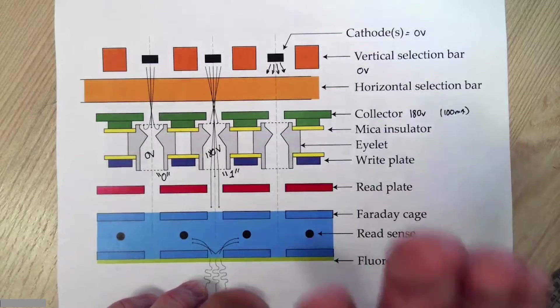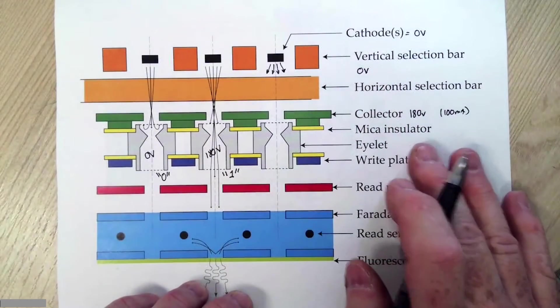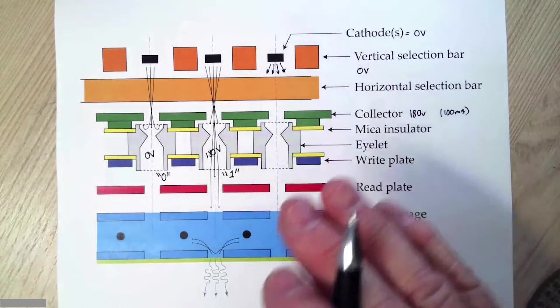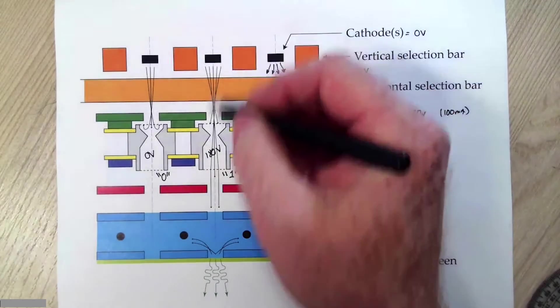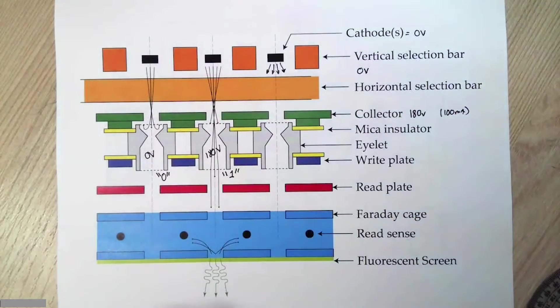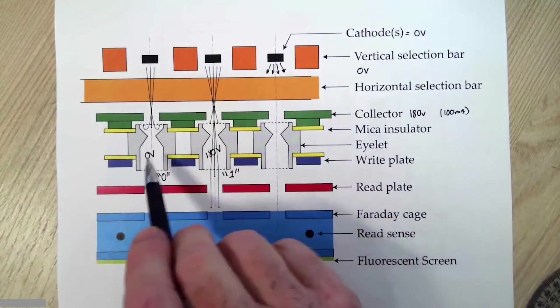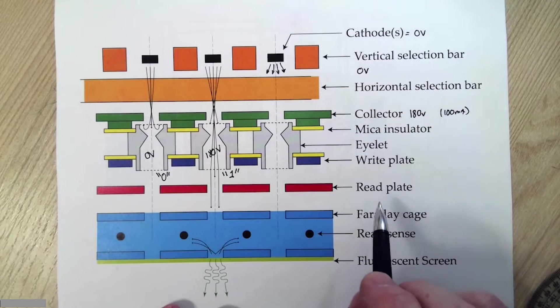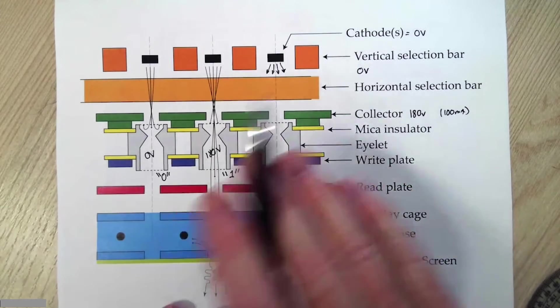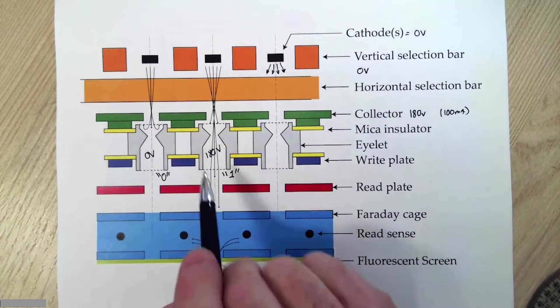Now, the selection process is important for whenever we write and read. So I'm going to come back to our selectors. In the idle state of the tube, this needs to be at zero volts so that I have this constant electron current, electron spray everywhere. I'm maintaining these potentials. When I want to write or read, I need to, and the word I'm going to use is deselect all bits except the one I'm interested in.